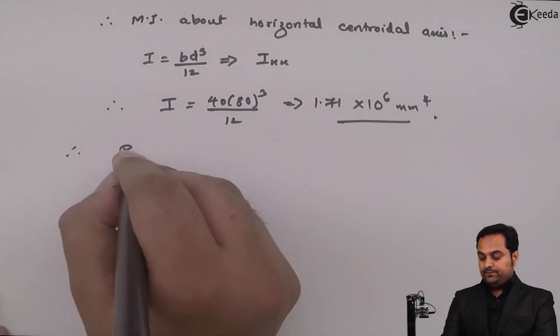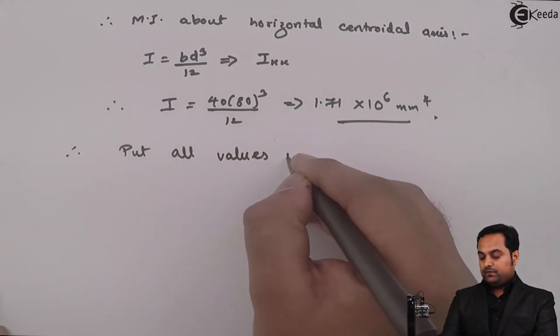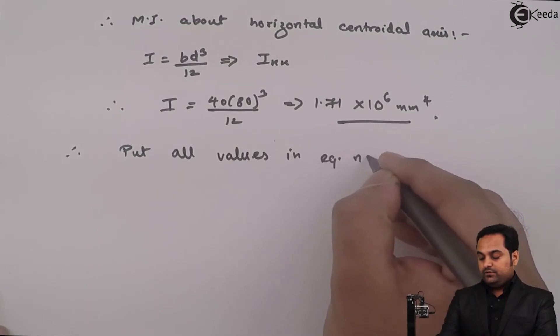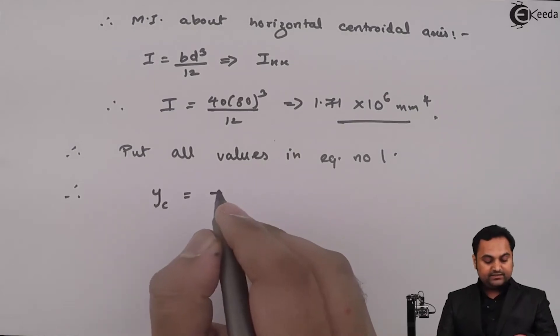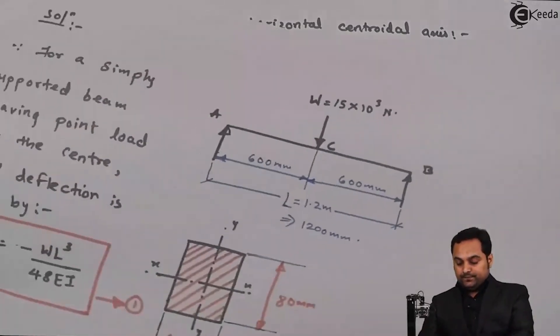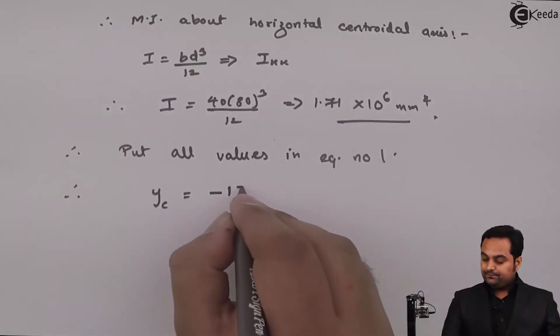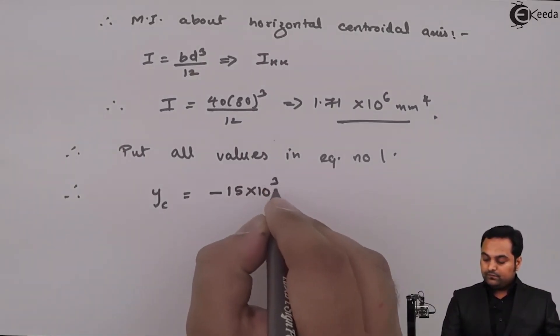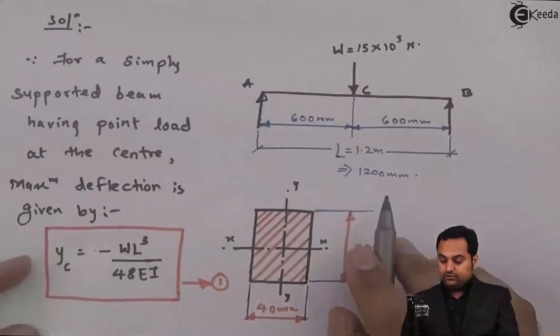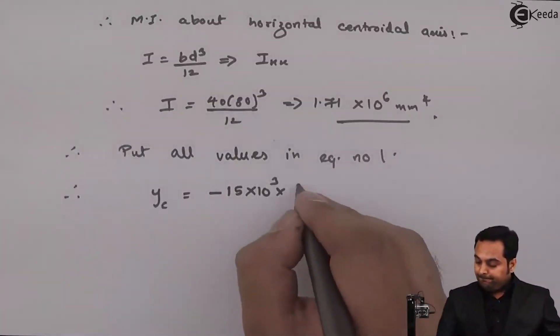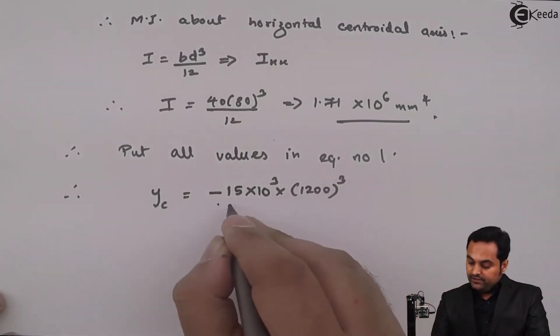Now after getting I, I will say that, therefore, put all values in equation number one. So we have y suffix c is equal to minus W, it is 15 into 10 raise to 3, into length L that is 1200, so 1200 cube.